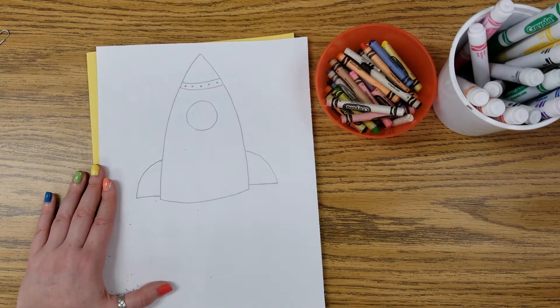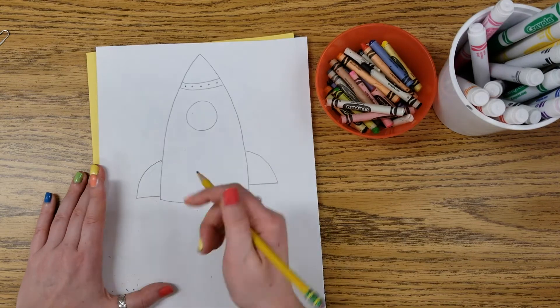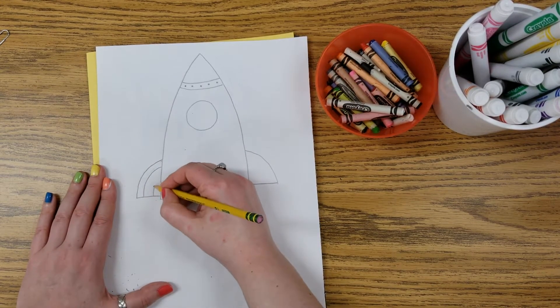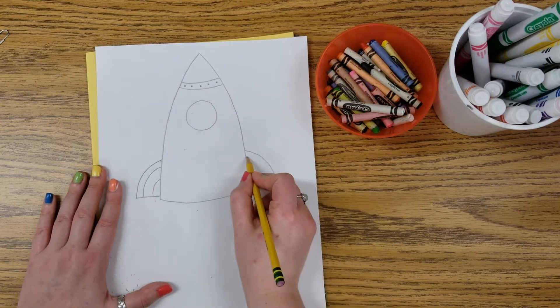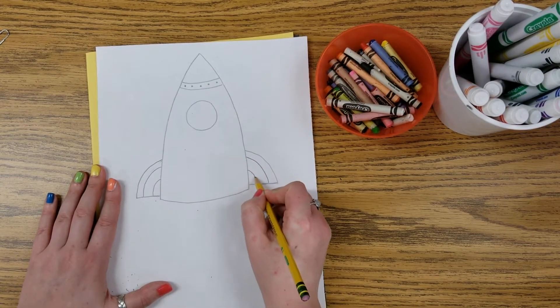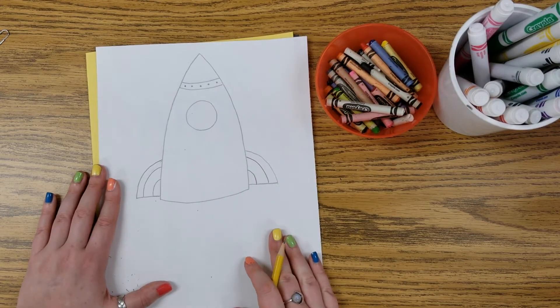If I wanted to, I could even add maybe some lines or some shapes or design onto my fins if I want. And we will add more details later as well, friends, if you want to your rocket ship. But you don't have to. Again, each rocket ship should look unique and different just like you.